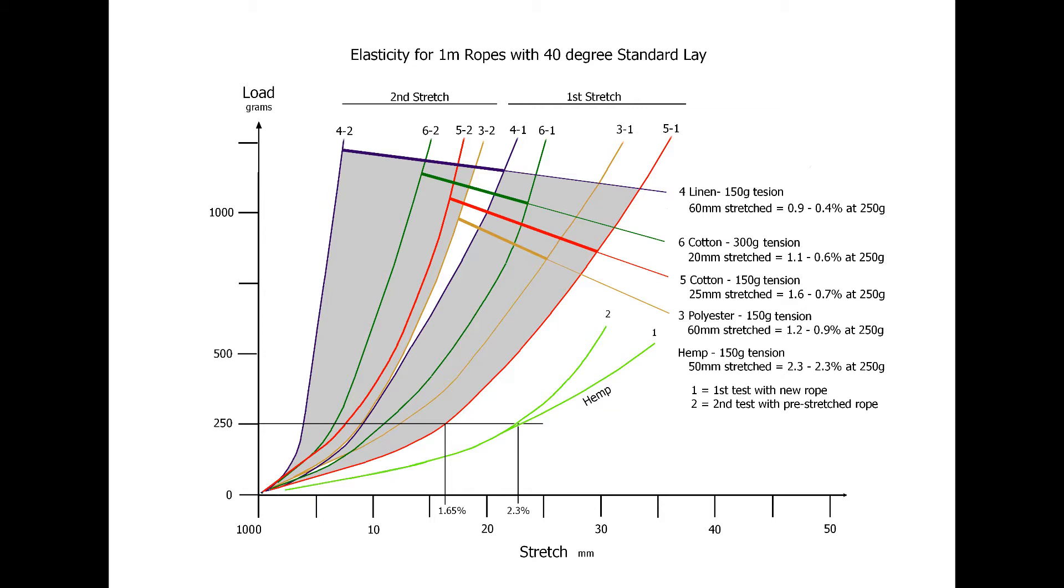250 grams was chosen as average load to calculate reasonable stretching percentages. Comparing cotton, linen, and polyester at 150 gram tension weight showed that pre-stretching the rope reduced stretching by 0.9%, 0.5%, and 0.3%. Increasing cotton tension weights from 150 to 300 grams made a considerable difference in the first test with a reduction of 0.5%, red to the green lines. The graph on the hemp rope comes from the next graph and shows that it is more elastic than the other materials.